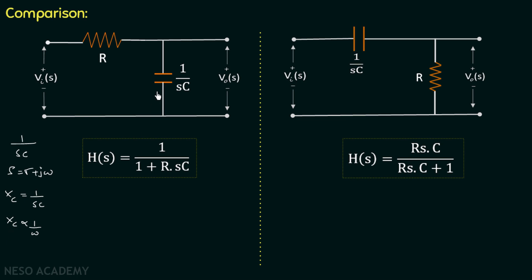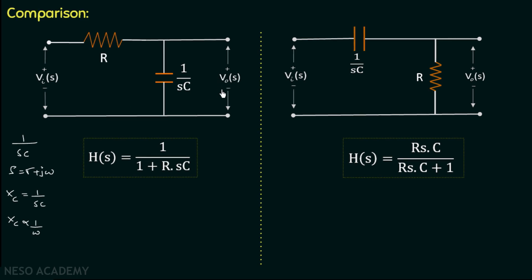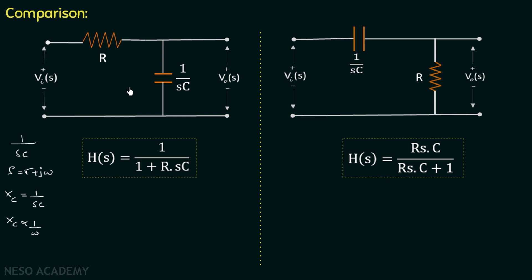For low frequencies the capacitor acts as an open circuit, and for high frequencies it acts as a short circuit. When a low-frequency signal is given to the circuit where the output is across the capacitor, the capacitor acts as an open circuit and some output voltage is obtained. But for high-frequency signal the capacitor acts as a short circuit and the output voltage becomes zero. This means for low frequency the output is non-zero and for high frequency the output is zero — so this circuit acts as an RC low pass filter.